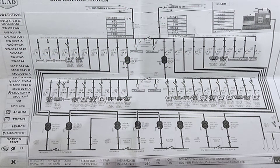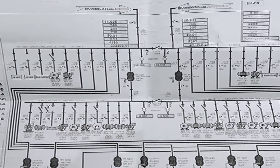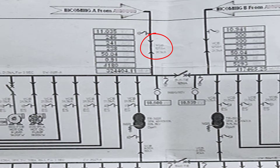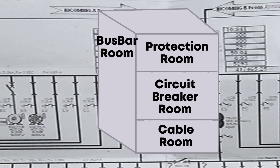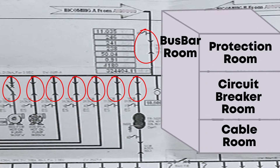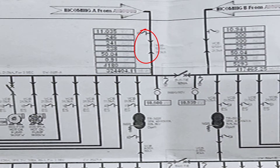As you can see in this three-phase system, we have two incoming sources from the national grid at 11 kilovolts. Those two incomings are responsible for supplying power to the substation. For incoming A, it is connected to a medium voltage circuit breaker inside a switchgear cell. This switchgear has four rooms: cable room, circuit breaker room, protection room, and bus bar room.